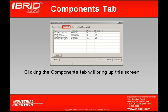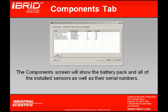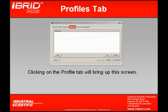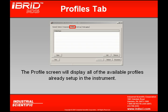If I click on my Components tab, this screen will appear. It allows me to view the type of sensors and battery pack installed in my instrument, along with their serial numbers, position, and whether these sensors are enabled or not enabled. This is particularly useful information, as I don't have to crack open my instrument to gather it — it's viewed right there on a computer screen. If I click on Profiles, this screen will display all the available profiles already set up in my instrument. From here, I can add a profile, remove a profile, or open a profile, so I can have extra profiles set up for use by different operators.